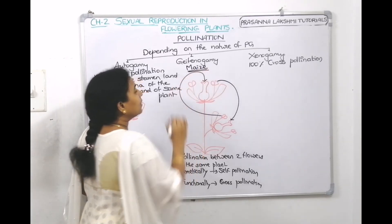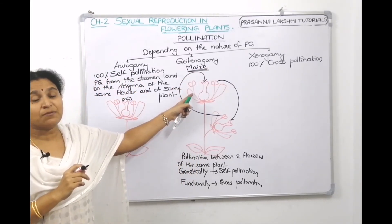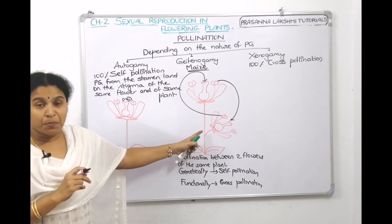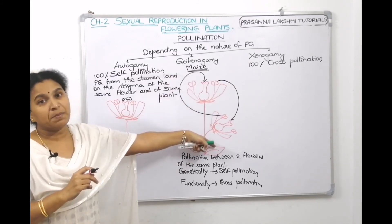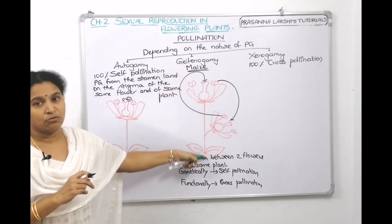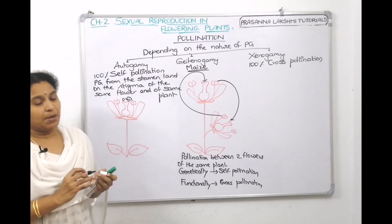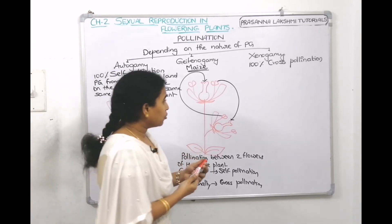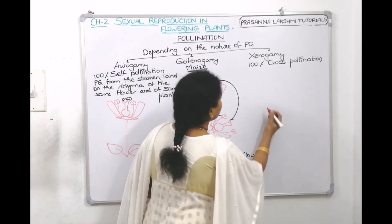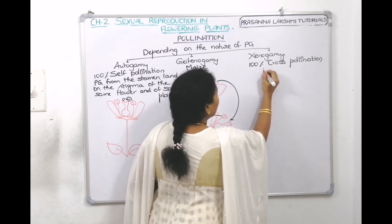In maize, the male flowers are on the top and female flowers are at the axis of the leaf. The male plant drops pollen onto the female plant, but on the same plant — that is called geitonogamy. Coming to xenogamy, an example is papaya.